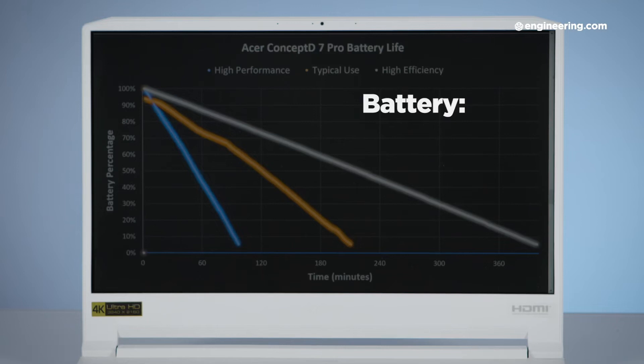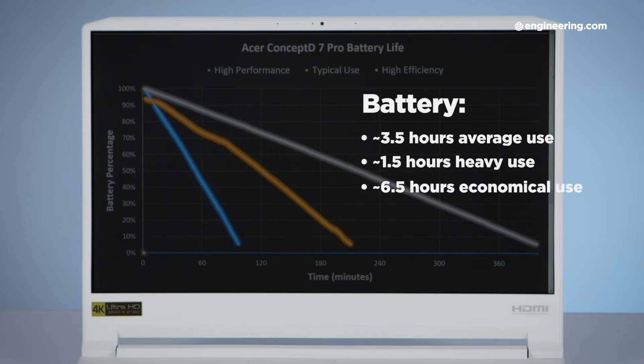The battery on this thing is a bit of a weak spot. It's not terrible. On average, we found we got about three and a half hours of use. If you're really pushing it, that's going to be about an hour and a half. And if you're really doing everything you can to save the battery, you're looking at about six and a half hours. So it's not terrible. It'll get you there. But if you're somebody who plans to be out and about all the time using this thing primarily as a mobile device, you're going to want to either carry your charger around with you all the time, or maybe look at something with a little bit better battery.